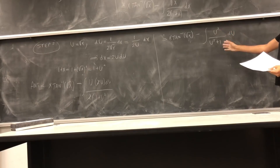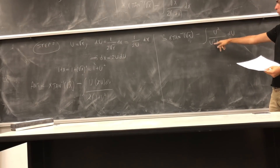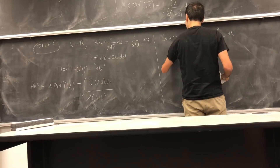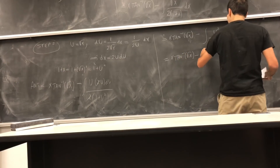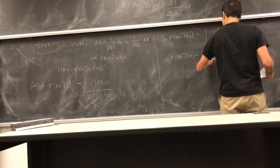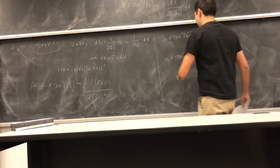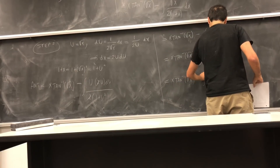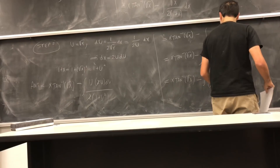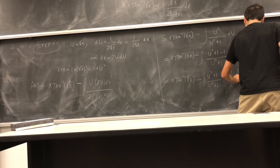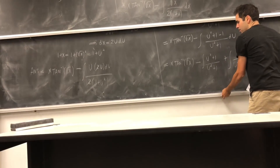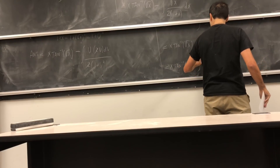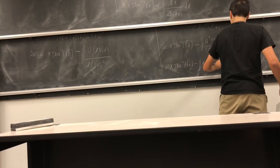The question is how do you calculate this integral of u squared over (u squared plus 1)? It's easy to calculate the integral of 1 over (u squared plus 1) — that's arctangent — so let's just add and subtract 1. We get x arctangent of square root of x minus the integral of (u squared plus 1 minus 1) over (u squared plus 1) du, which we split into: minus the integral of (u squared plus 1) over (u squared plus 1) du, plus the integral of 1 over (u squared plus 1) du.